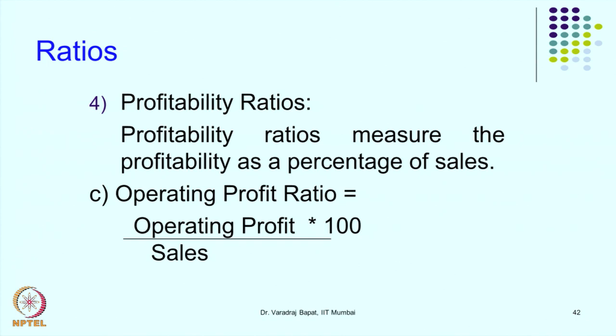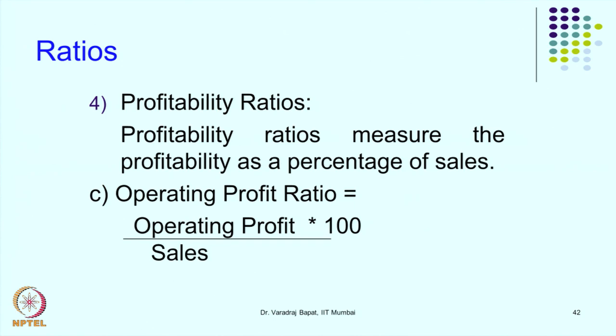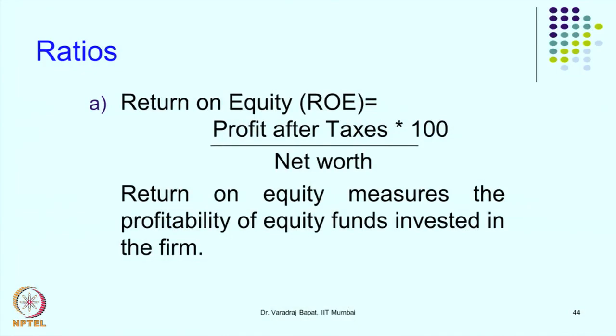Profitability can also be calculated at the operating profit level, where it is operating profit divided by sales — this tells us the profitability of our operations. Within profitability ratios, there are other ratios known as return ratios, which measure profitability in the context of capital employed or resources used by the undertaking. The earlier profitability ratios were profitability in relation to sales, but for the investor, what is more important is the money put in and what return the company is able to generate.